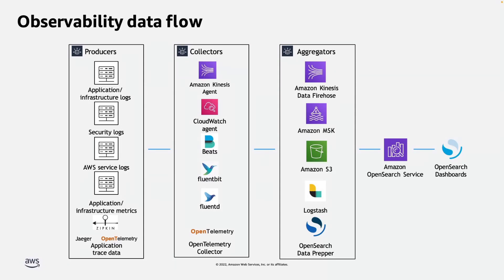Another one is OpenTelemetry. OpenTelemetry is a community-driven, open source project designed for managing telemetry data — which means traces, metrics, and logs. It also supports very popular open source wire formats including Jaeger, Zipkin, and Prometheus.